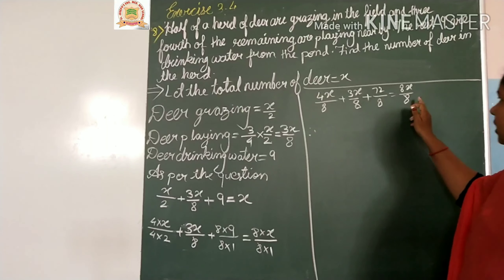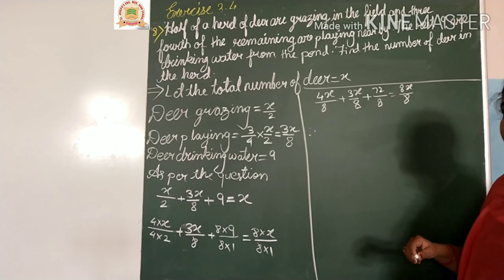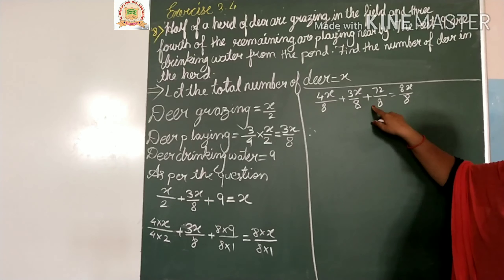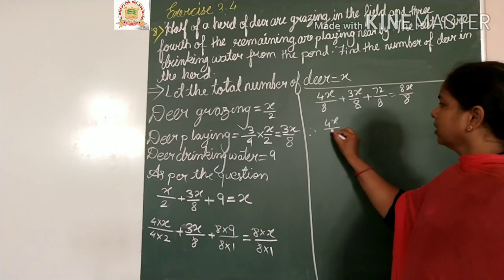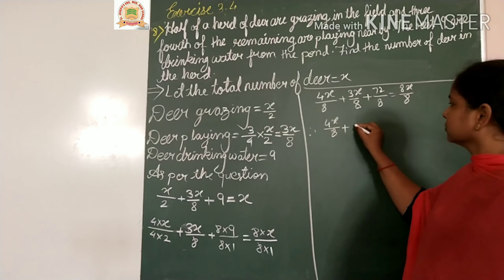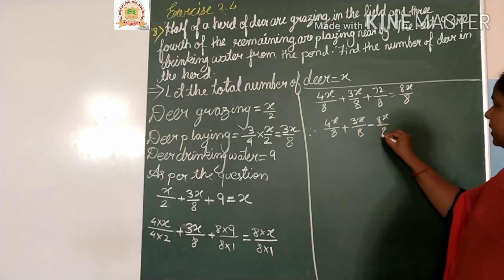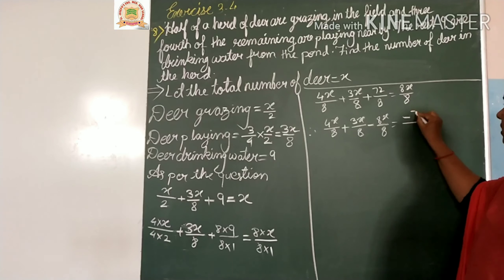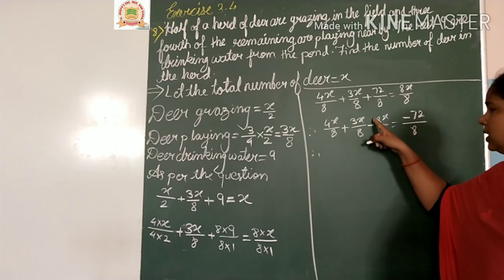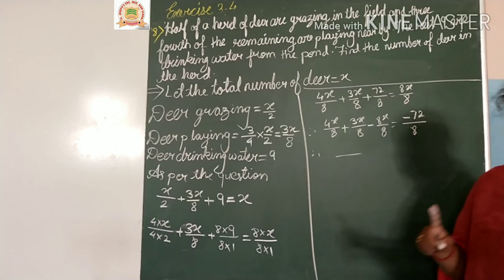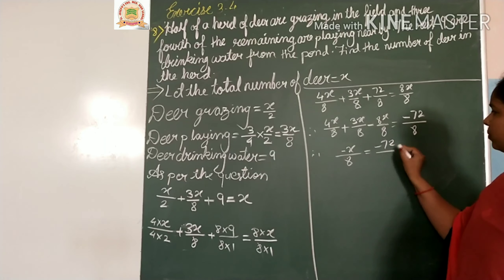Now shifting terms: 8x moves to the left side as minus 8x, and 72 moves to the right side as minus 72. So 4x by 8 plus 3x by 8 minus 8x by 8 equals minus 72 by 8. Combining: 7x minus 8x gives minus x by 8 equals minus 72 by 8.